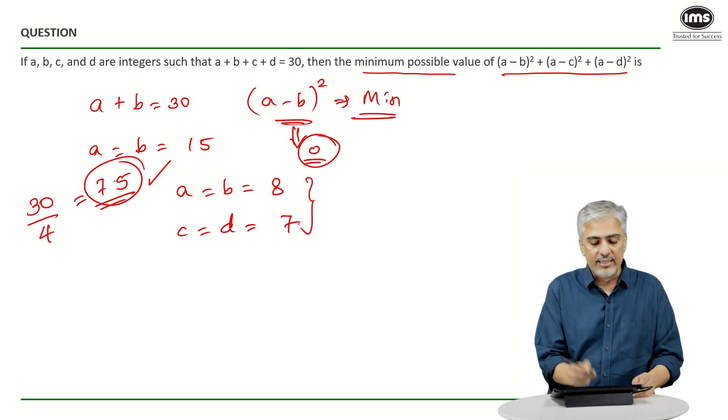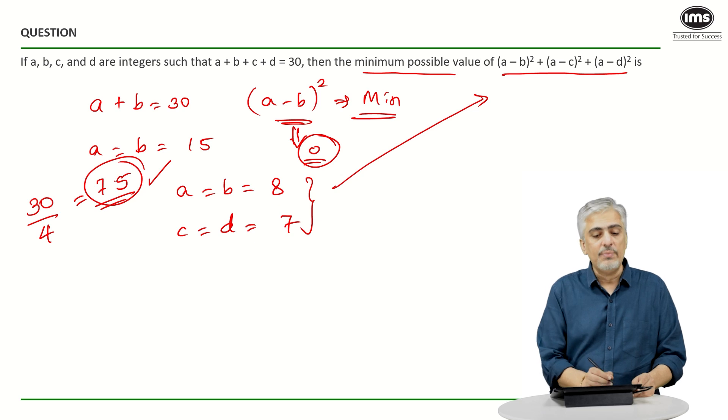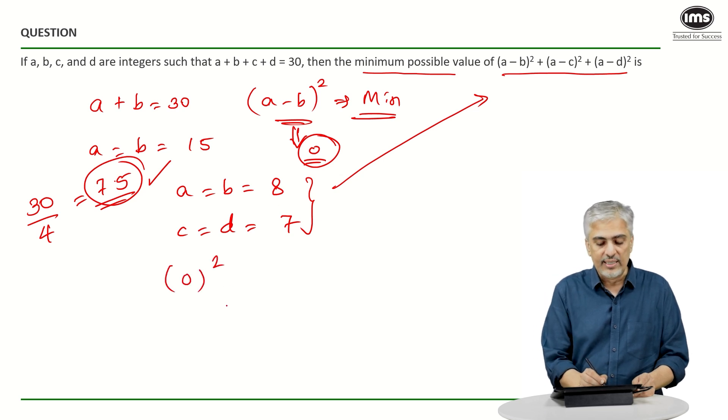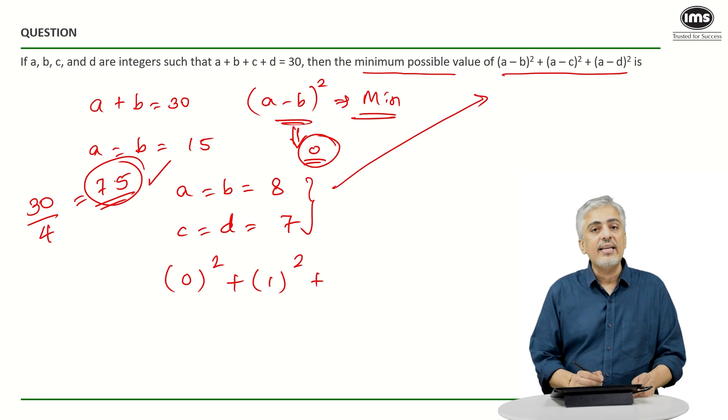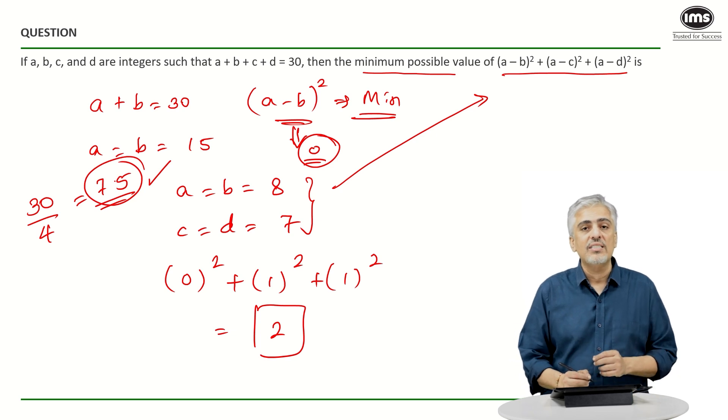So, exactly now take these values and just put it in the equation which we want. So, what have we got? A minus B the whole square. A minus B will become zero. Zero square is zero. A minus C will be one. So, one square and A minus D will also be one. So, one square. Answer will be two and that is the minimum value of this expression.